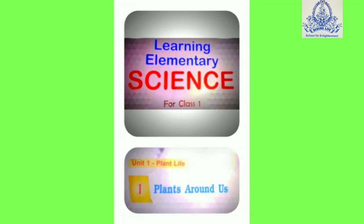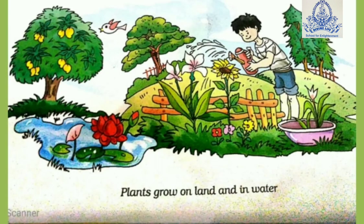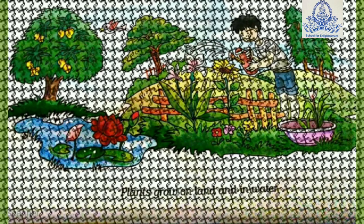Hello Children! Learning Elementary Science for Class 1, Chapter 1: Plants Around Us. You can see many plants all around us. Plants grow on land and in water.